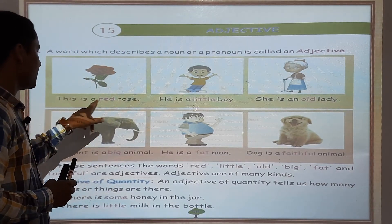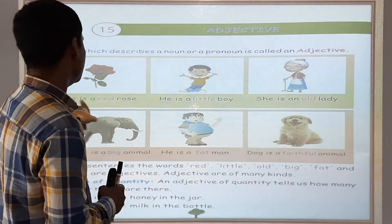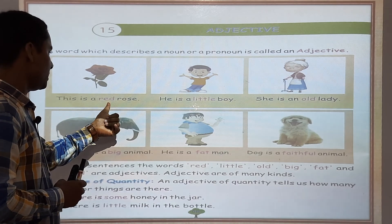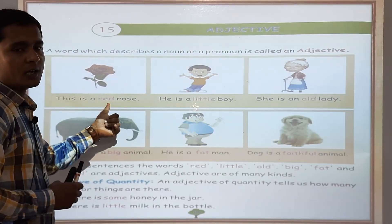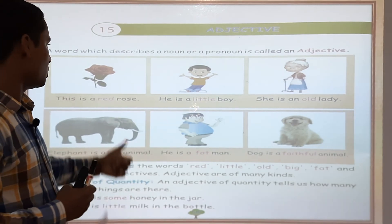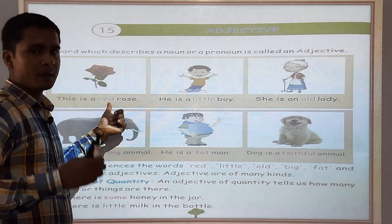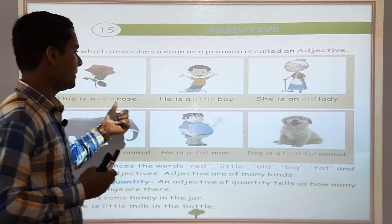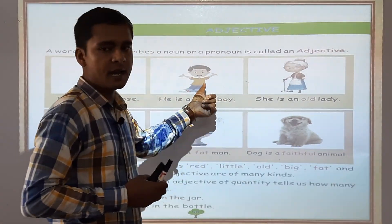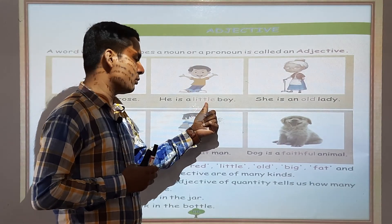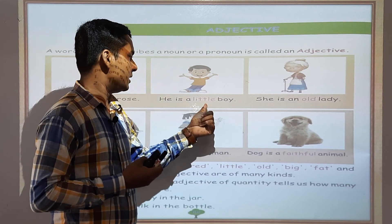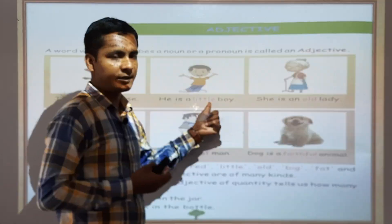This is a red rose. Dekh rahe hain, yahan red jo hai, kya kar raha hai — noun ko describe kar raha hai. So red hamaara kya hai? Ek Adjective hai. He is a little boy — yeh kya hai, ek chhota ladka hai. Yahan pe little word kya kar raha hai? Noun ko describe kar raha hai, isliye little kya hai? Ek Adjective hai.